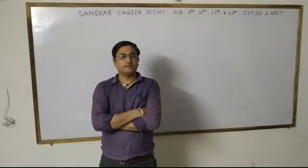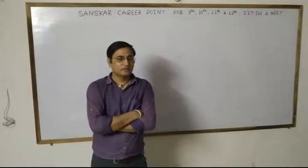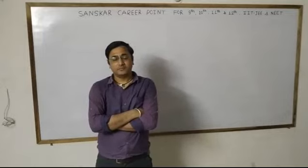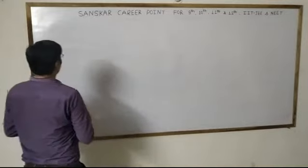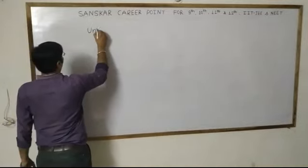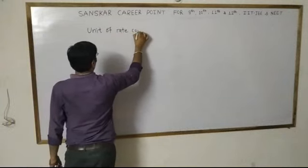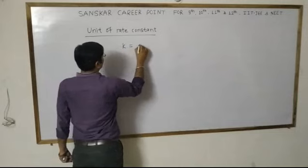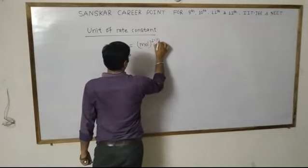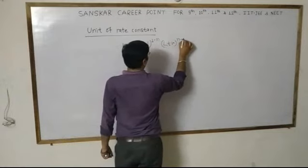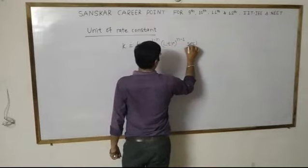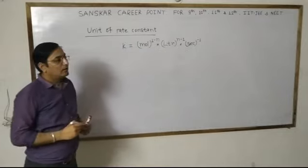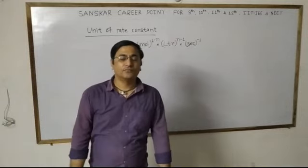Good morning students, we continue the class. In the last class, we discussed the unit of rate constant. We found that the unit of rate constant is mole to the power (1 minus n), liter to the power (n minus 1), and second to the power minus 1. This is the general unit of rate constant.